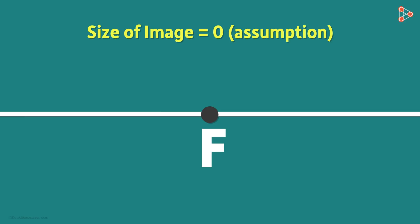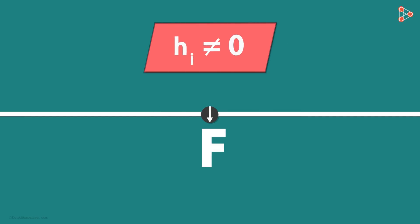However, theoretically, we say that when the object is at infinity, the image is point-sized. But in reality, this is not a point-sized image because we cannot define infinity. The image, however small it is, still has some dimensions. So in reality, HI cannot be zero.